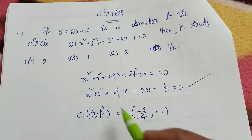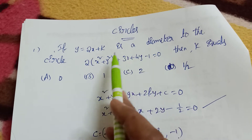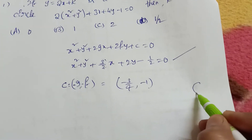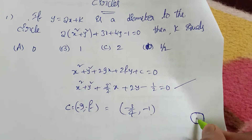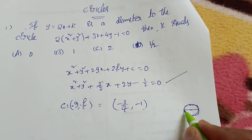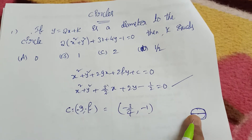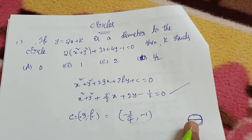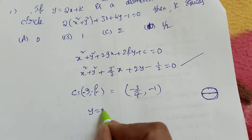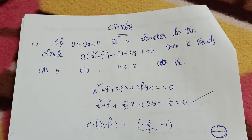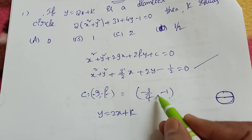Now the question says y = 2x + k is the diameter of the circle. Diameter means it passes through the center. So the center point must satisfy the line equation y = 2x + k.